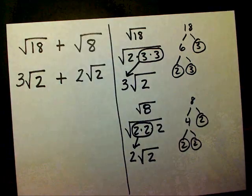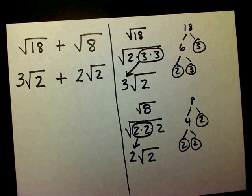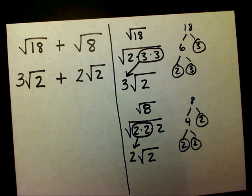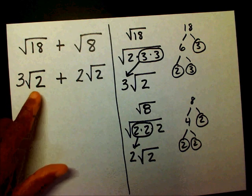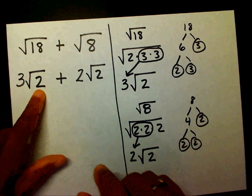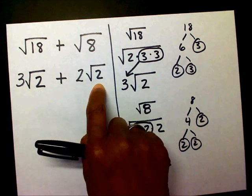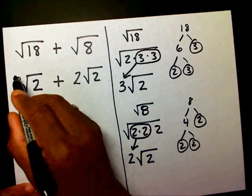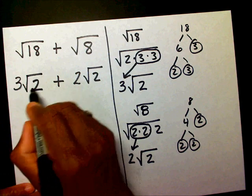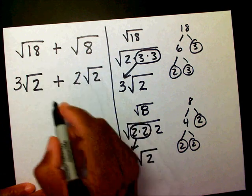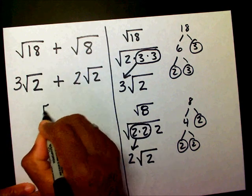Now that I've simplified my radicals, I can see that my radicand over here is two and my radicand over here is two. So since I have three radical twos plus two radical twos, that leaves me with five radical twos.